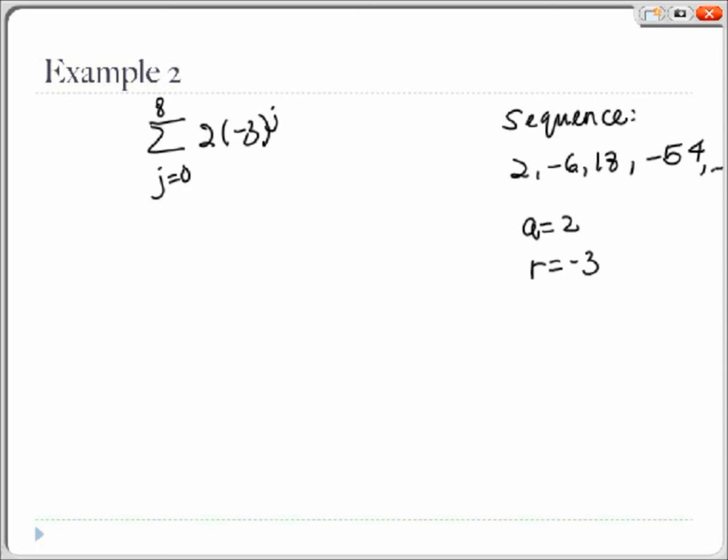So now we can use the formula to compute the summation. So we get 2 times negative 3 to the 9 minus 1 over negative 3 minus 1. And we get 9,842.